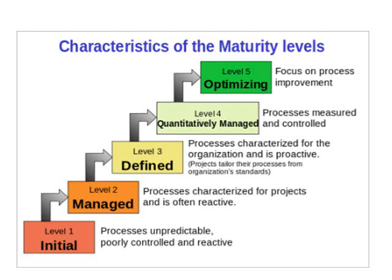Level 4 — Quantitatively Managed: processes are measured and controlled. The organization uses quantitative data to implement predictable processes that meet organizational goals. Level 5 — Optimizing: processes are stable and flexible, with the organizational focus on continued improvement and responding to changes.